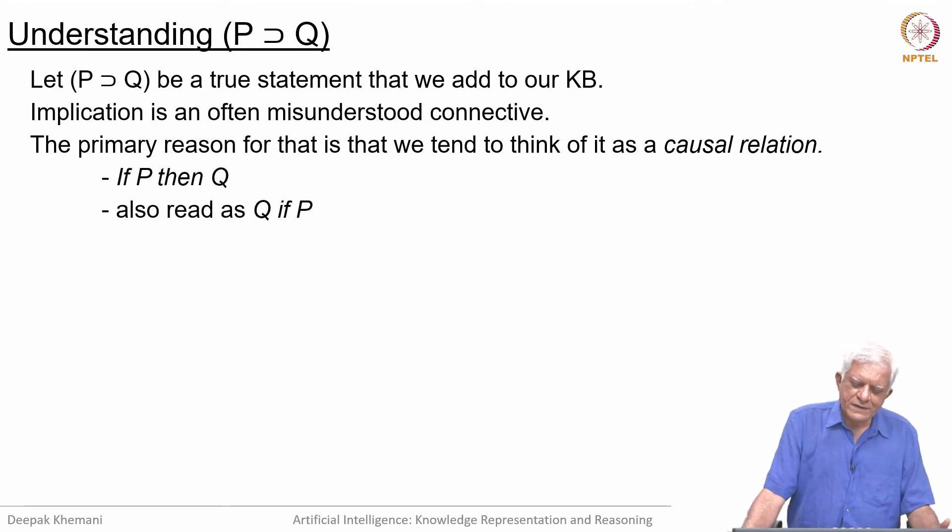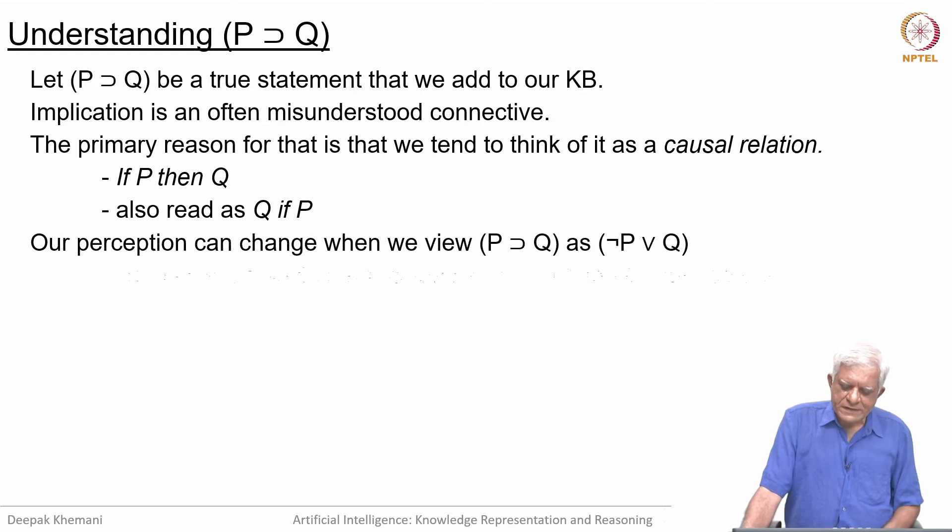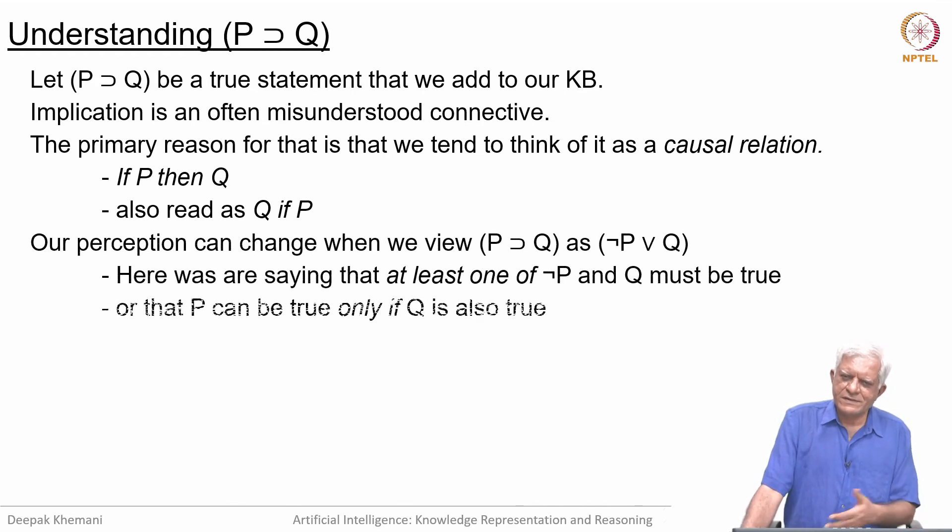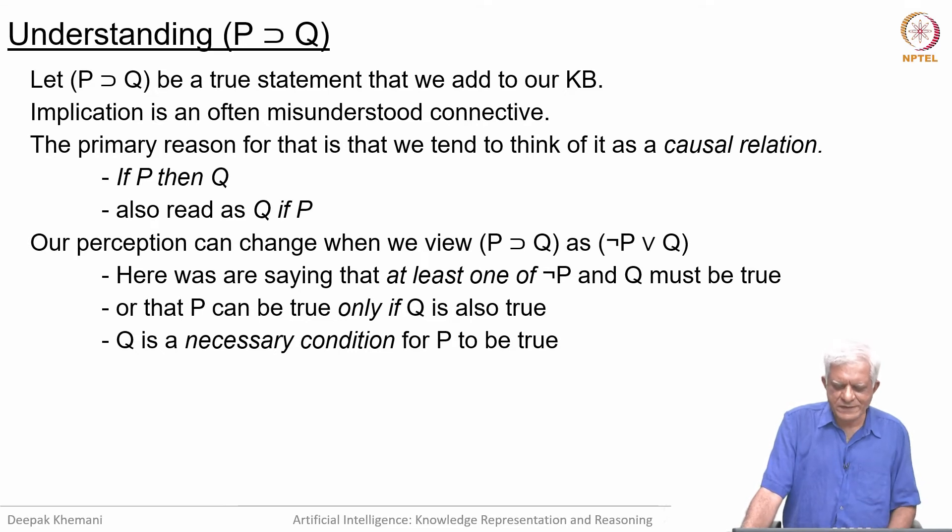If we say if P then Q, in logic it does not mean that P causes Q. In logic it means that if P is true, then Q must also be true, which is also read as Q if P. If we think of it in a modified form, because we know that P implies Q can be written as not P or Q, then that causal connection somehow does not figure into our thinking. If you think of it as not P or Q, then here we are saying that at least one of not P and Q must be true. That is equivalent to saying that P can be true only if Q is also true, because if Q is false, P must be false because the sentence has to be true.